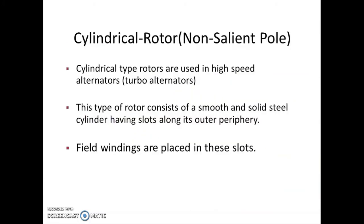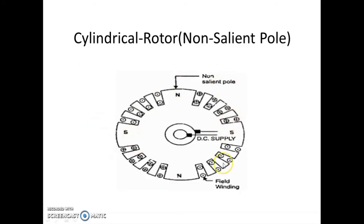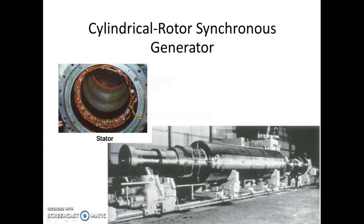The other type is cylindrical type of rotor, also called non-salient pole. Cylindrical rotors are used for high-speed alternators. It is a smooth, solid-like structure with slots on its outer periphery for the field winding. In the example of a cylindrical rotor, there are no protruding poles, but as the field windings are placed in these slots, the poles are automatically generated. Hence we can see a four-pole cylindrical rotor. Cylindrical rotors are very large in actual power station applications.